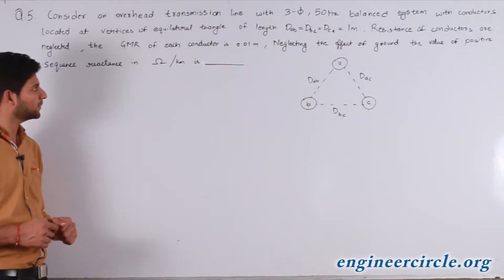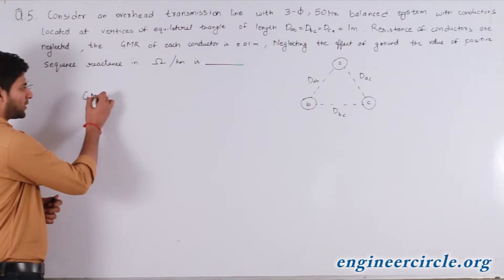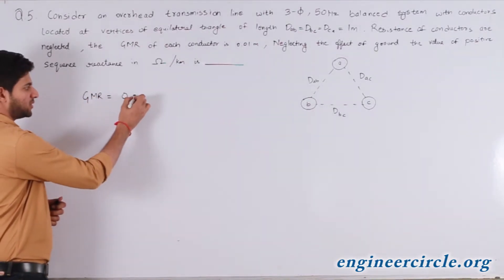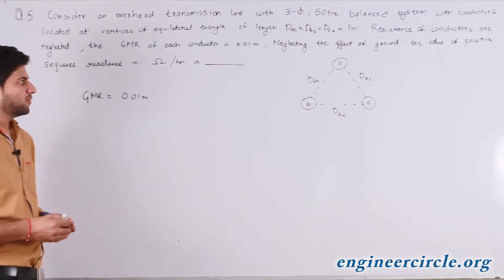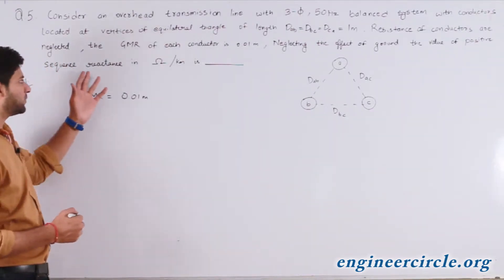Resistance of the conductors are neglected and the GMR is given to be 0.01 meter. We need to neglect the effect of ground and then find the value of positive sequence reactance.